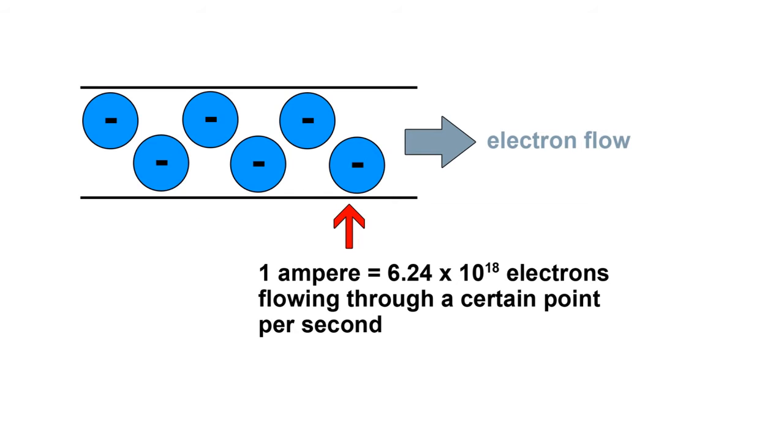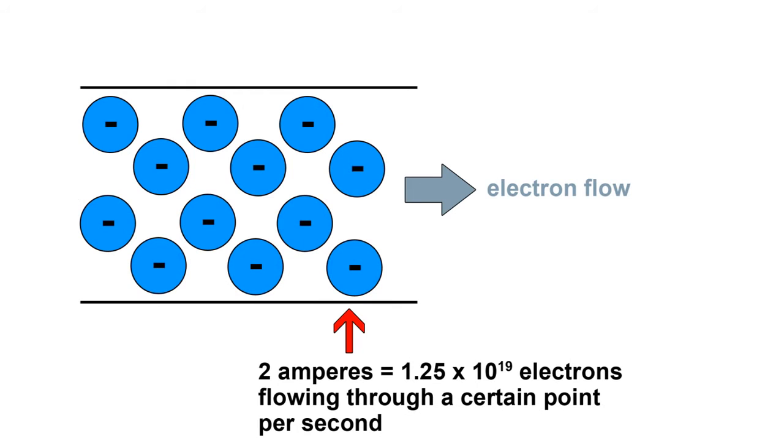Now how do we measure electric current? Well you've probably heard of the term amp which is short for ampere. An ampere refers to the amount of electrons that are flowing per second through something that conducts electricity. One ampere is equivalent to 6.24 times 10 to the power of 18 electrons flowing per second. You don't really need to memorize that number but you should understand that electrical current refers to the amount of electron flow and that one amp means that a lot of electrons are flowing. And obviously two amps means that twice the electrons are flowing.